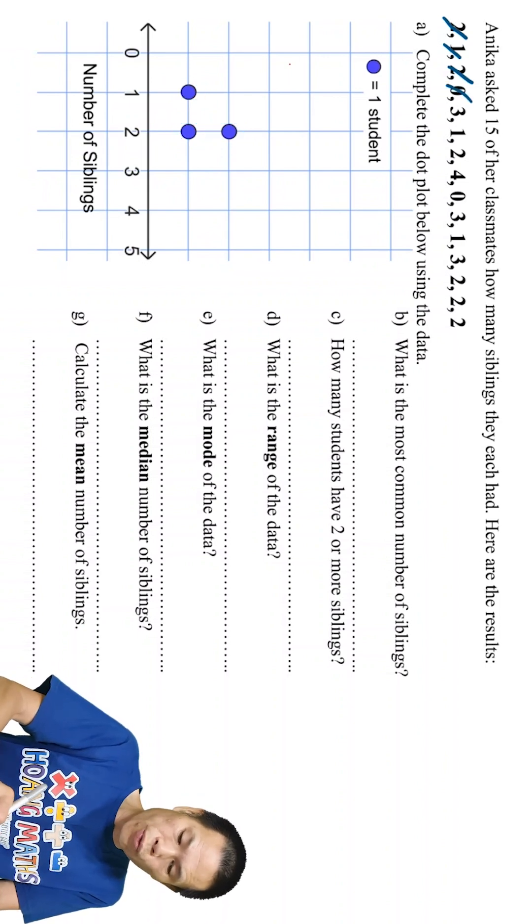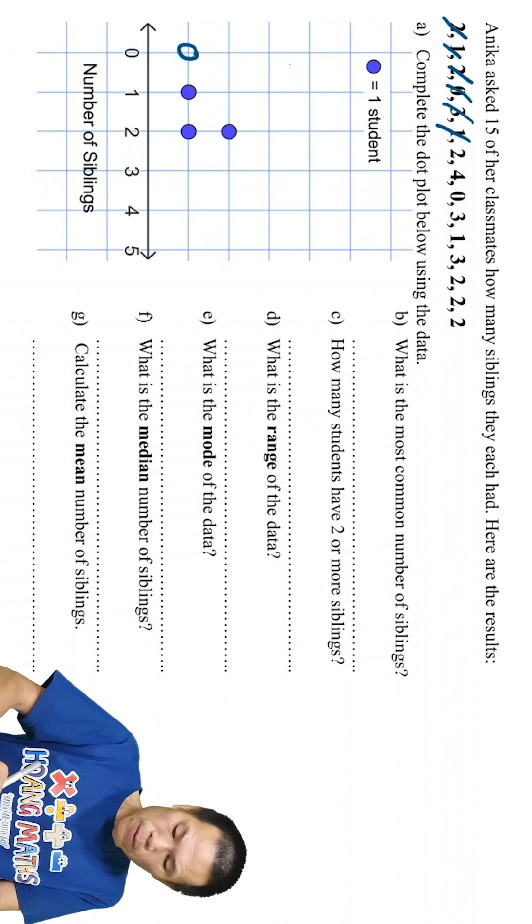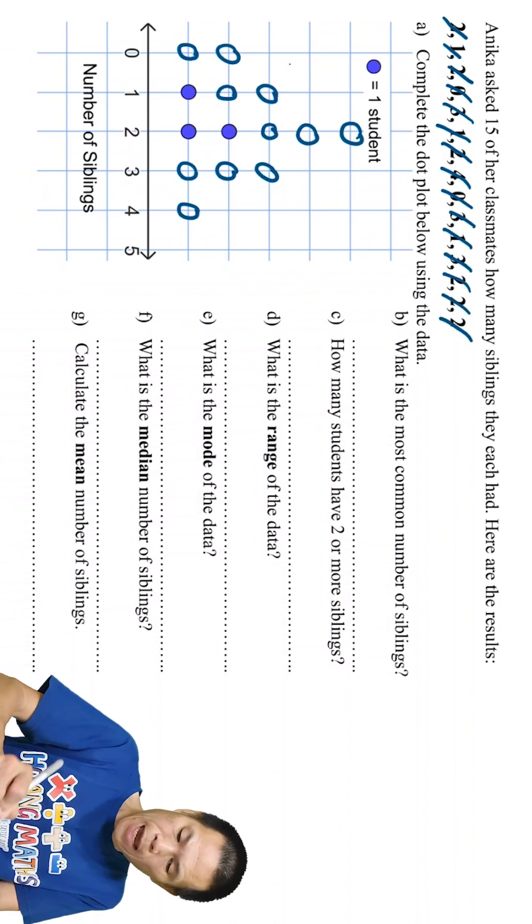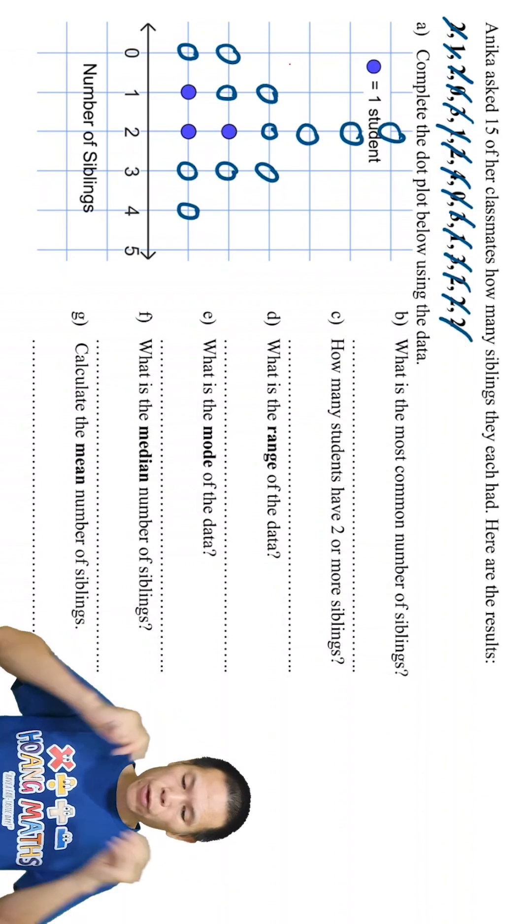And then we have 0, 3, 1, so 0, 3, 1, and then we have 2, 4, 0, 2, 4, 0, and 2. So there you go.